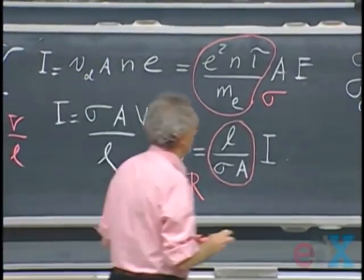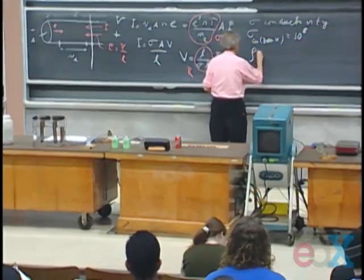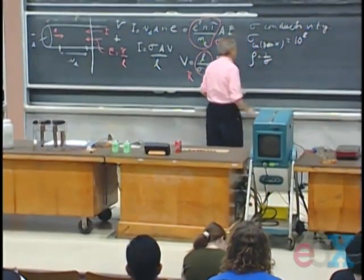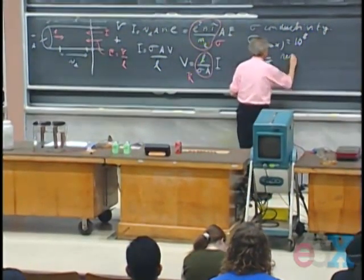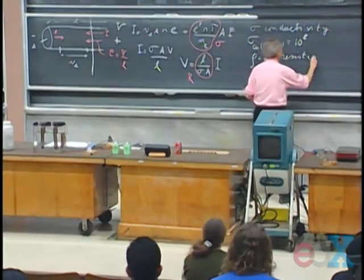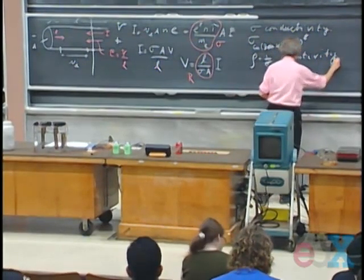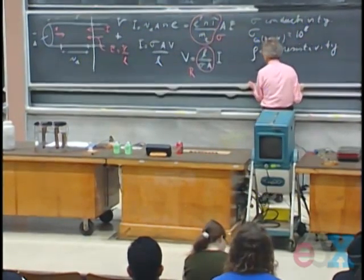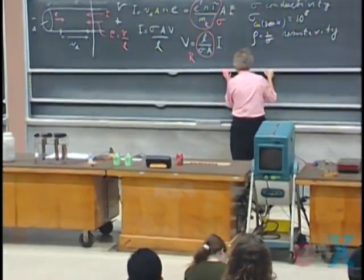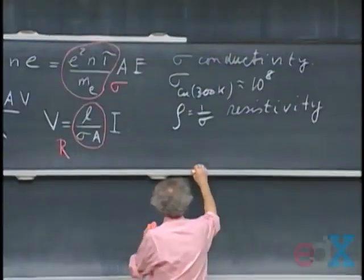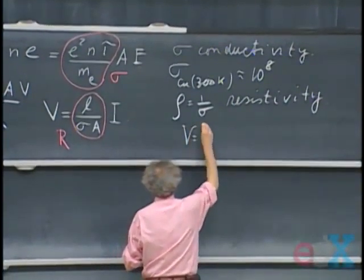We often write down rho for one over sigma. And rho is called the resistivity. So either one will do. So you can also write down, you can write down V equals I R.